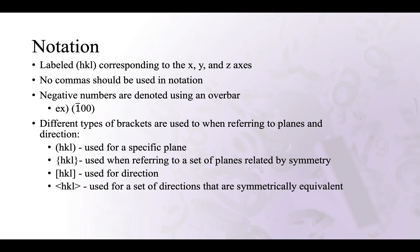Next, we have the notation. Miller Indices are labeled hkl, which corresponds to the x, y, and z axis respectively. There should be no commas used between the numbers. And to denote negative numbers, an overbar is used. As you can see in this example right here, this would be negative 1, 0, 0.